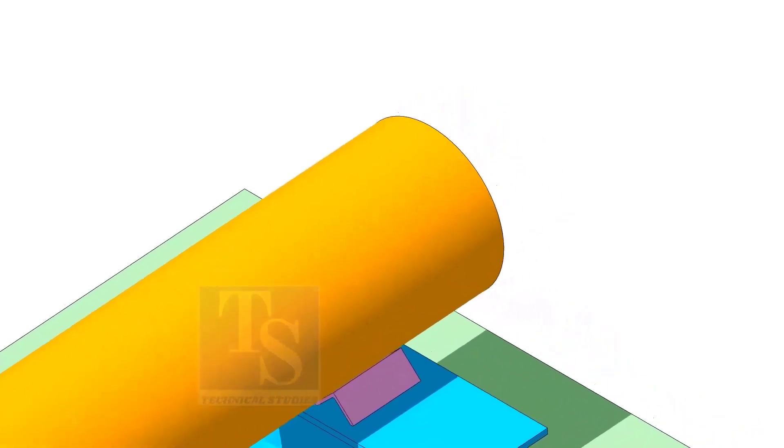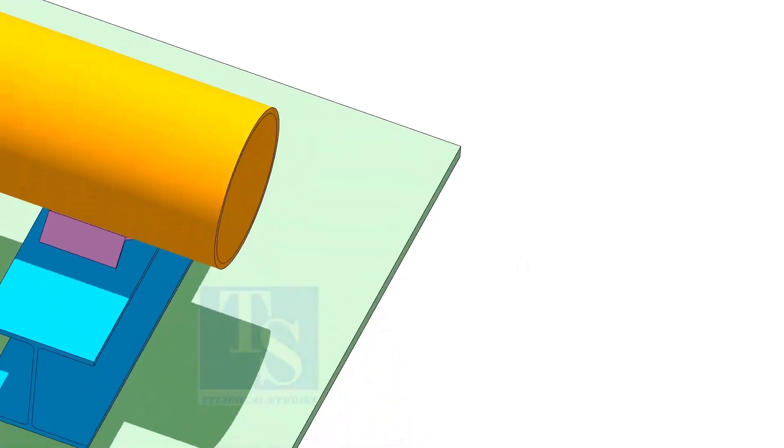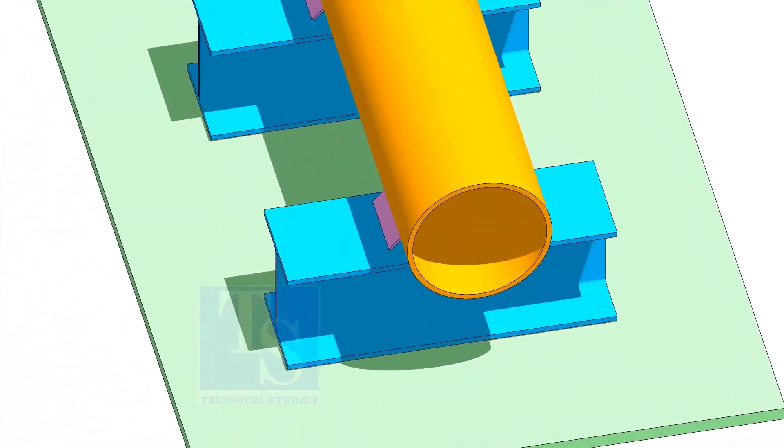Go to the other end of the pipe. Put the flange. Correct the gap between the pipe and the flange and correct the gap for the welding.